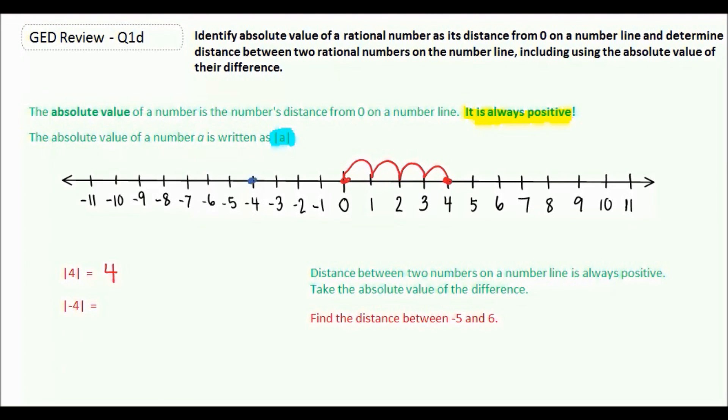If we're looking at negative four, once again here's zero, that would be one, two, three, four spots away. So the absolute value of negative four is also four.